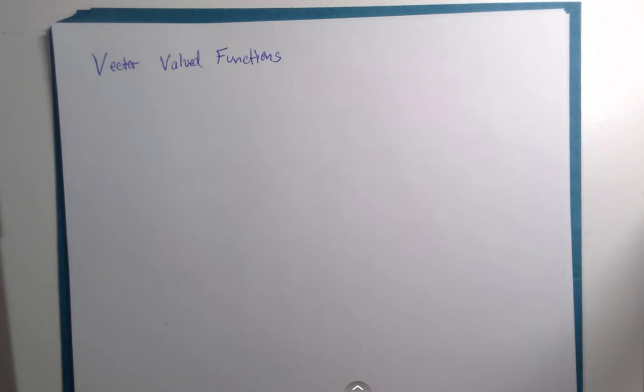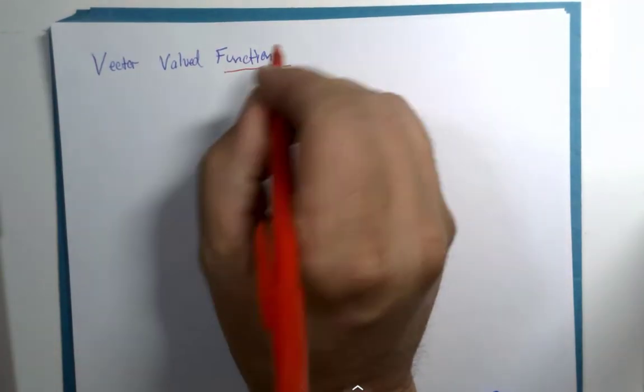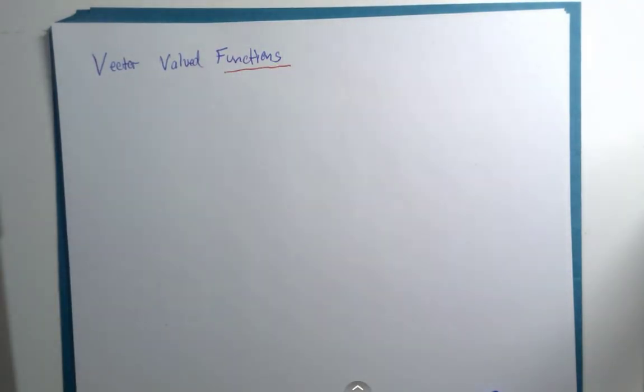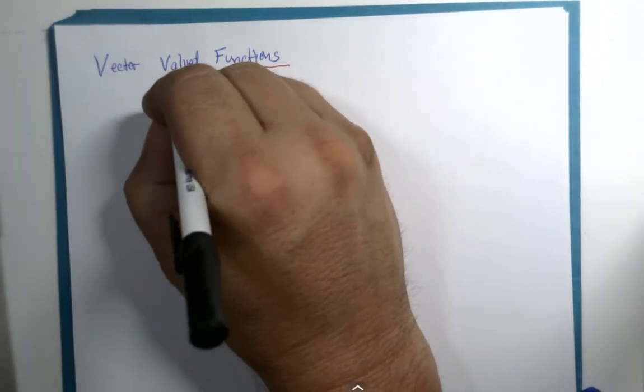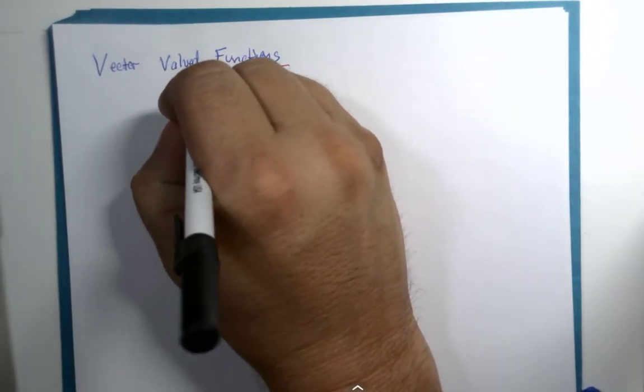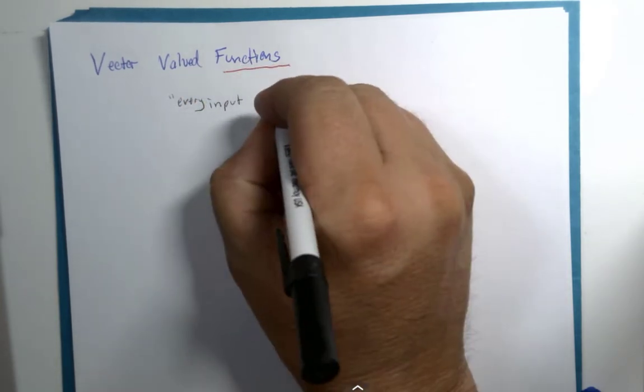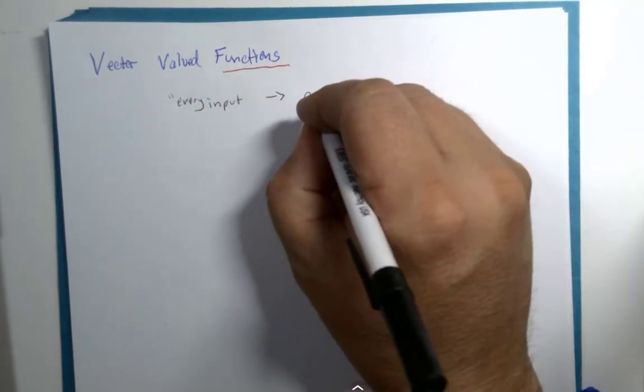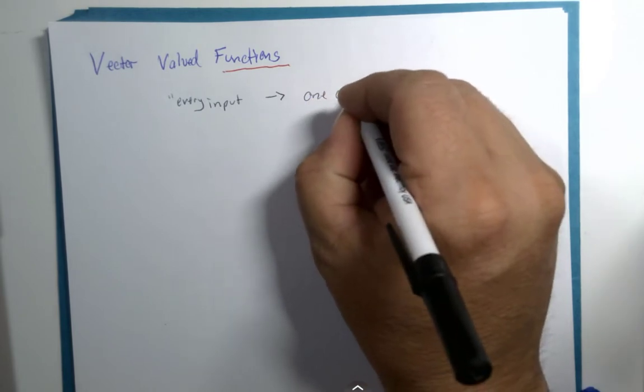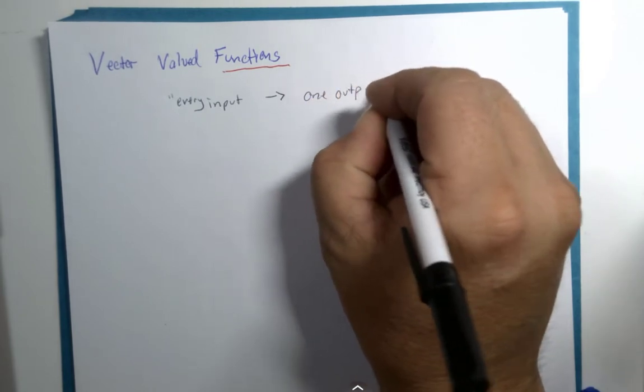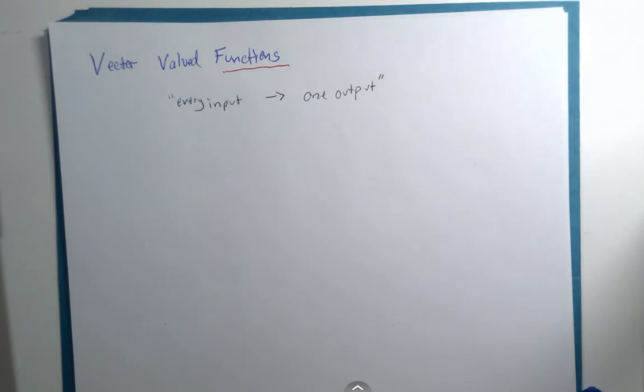So what we've got here is a function, and let's do a quick reminder of what that means. Sort of a shorthand: for every input there is only one output.